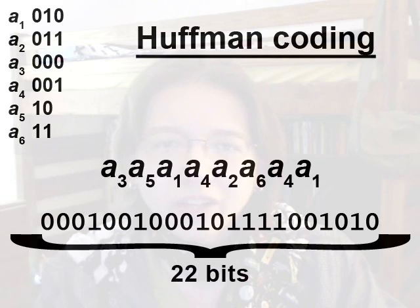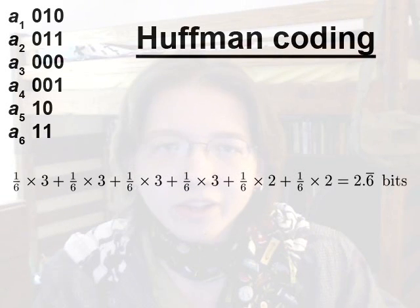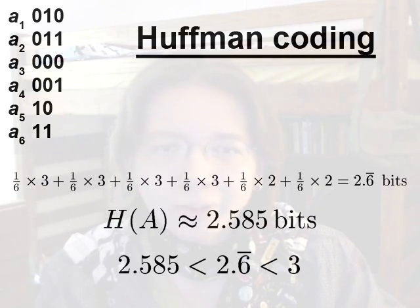This is an improvement and it's more efficient — about 92% of the size of the message if encoded with all 3-bit code words. The average number of bits used per symbol with 3-bit code words was 3 bits. For this Huffman coding, we calculate the number of bits in each code word weighted by the probability of the symbol, to get the average number of bits used per symbol. It's 2.6 repeating, which is better than 3 bits, and it's getting close to the 2.585 bits of entropy that the fair die has. And that's pretty good.